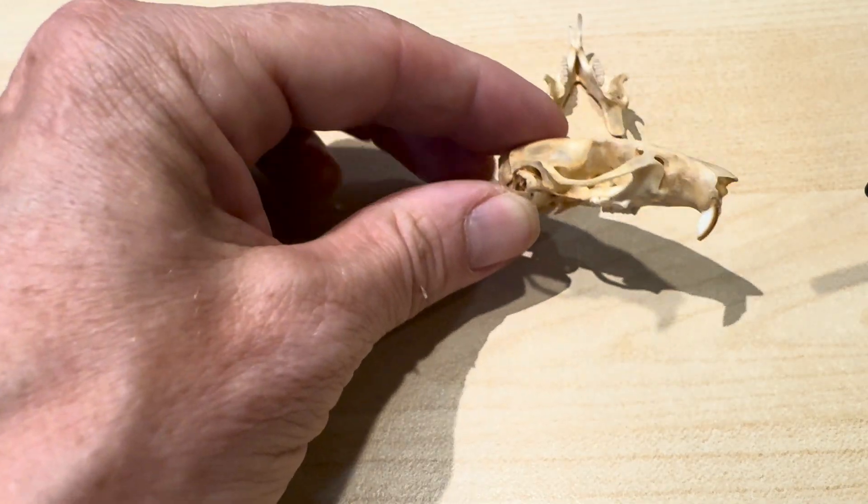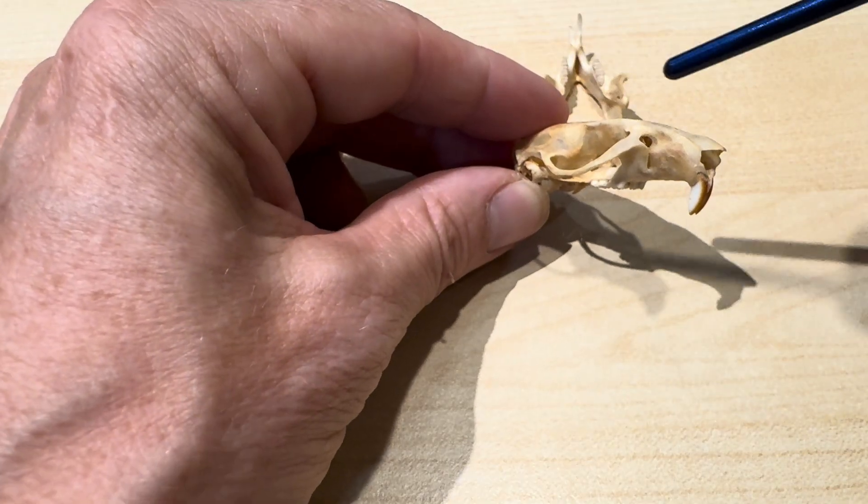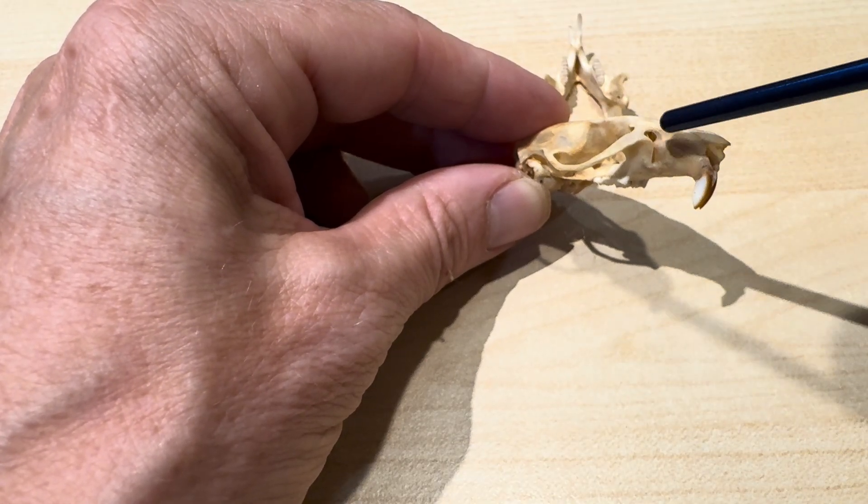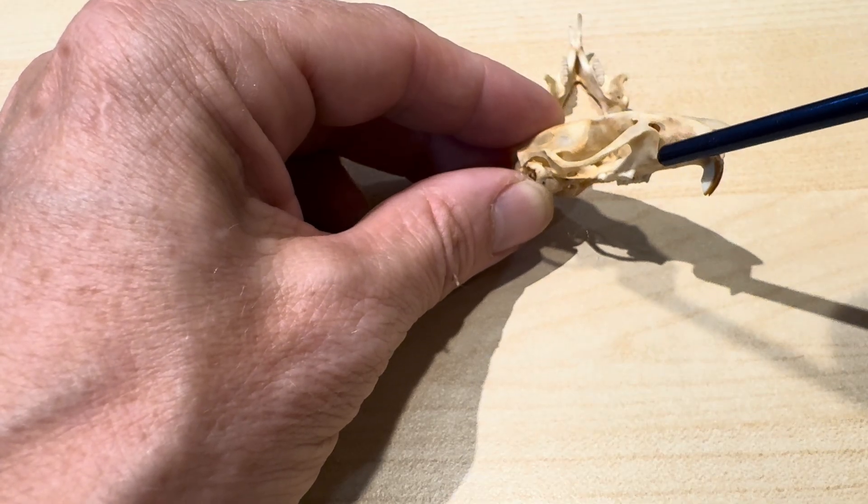So see that? Let me turn it a bit for you there. See that slit? Okay. So we have the zygomatic notch and the infraorbital foramen slit.